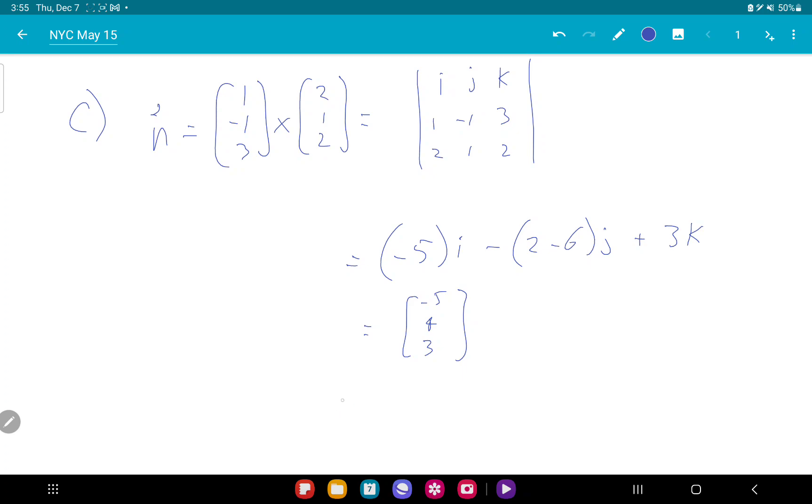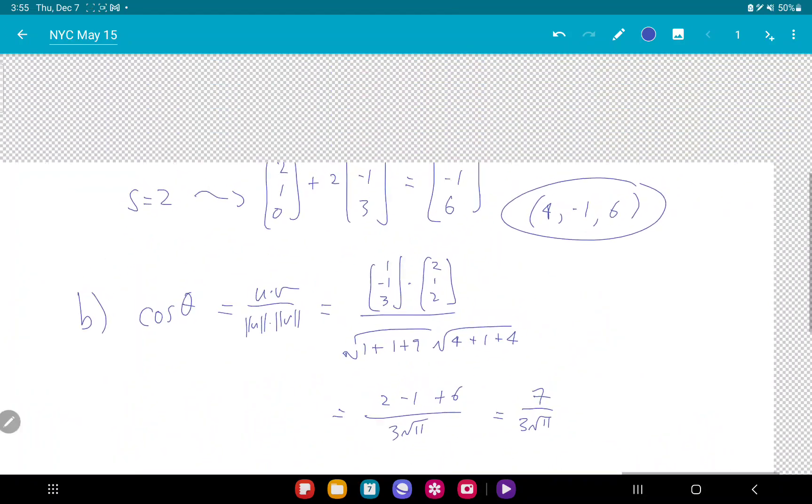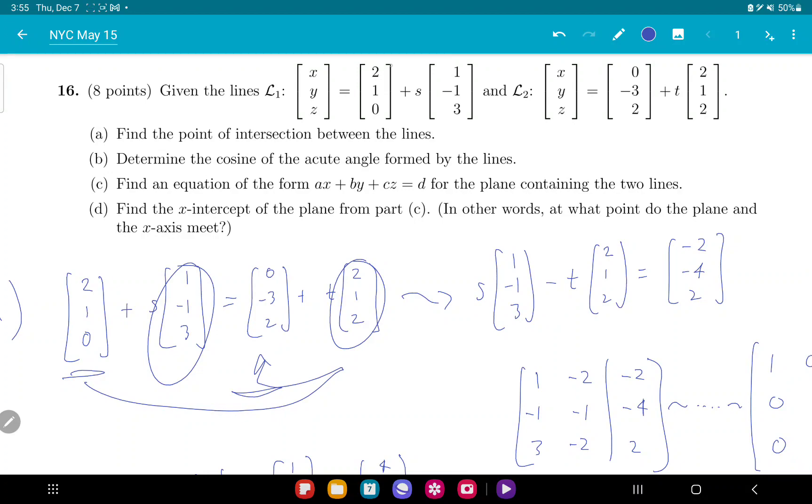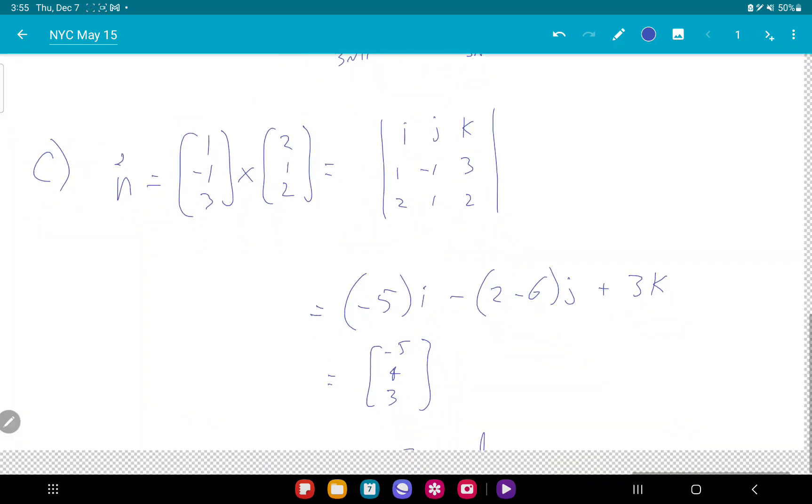So my plane is going to be -5x plus 4y plus 3z equals something. To find the number here, I just need to take a vector that I know is on the plane. Let's go up here and grab something. The plane contains both lines, so it contains the point (2, 1, 0).